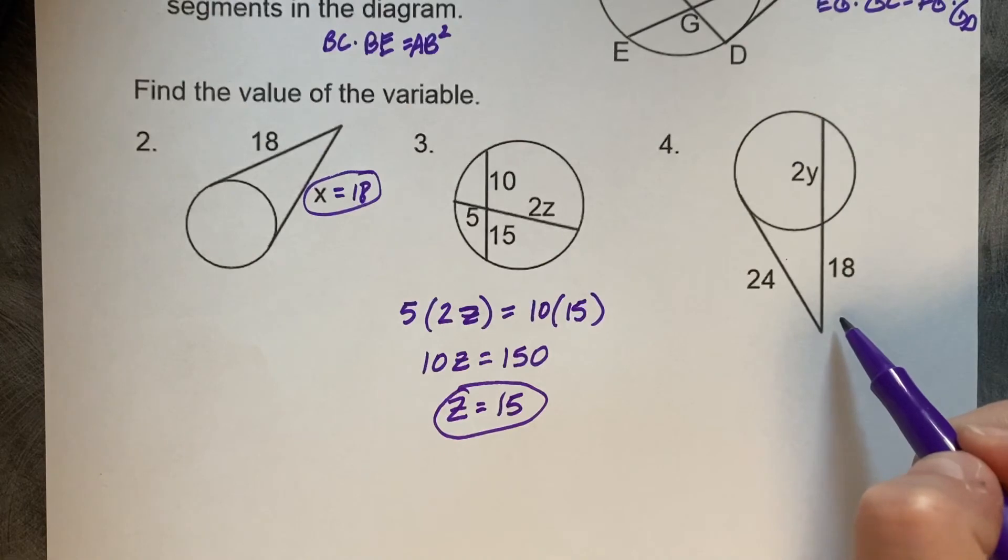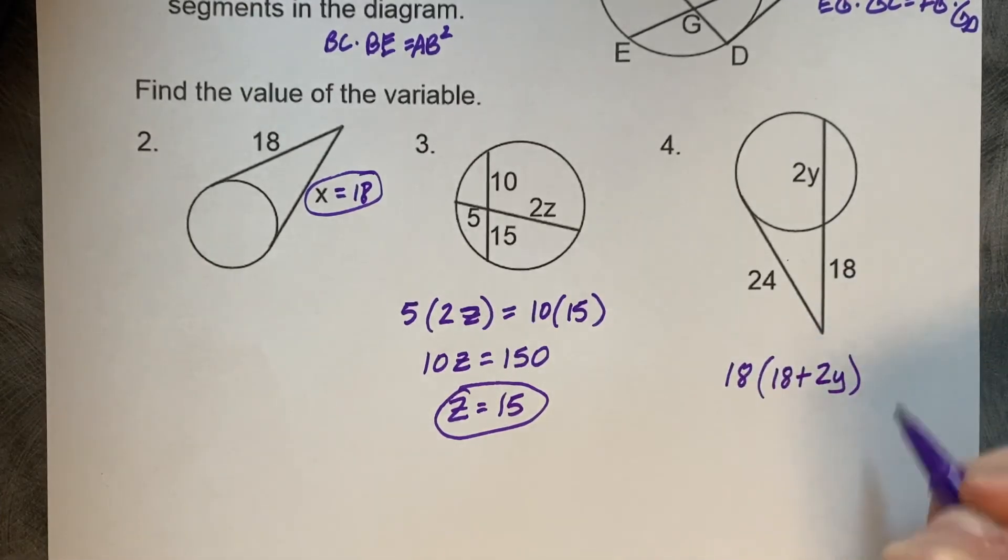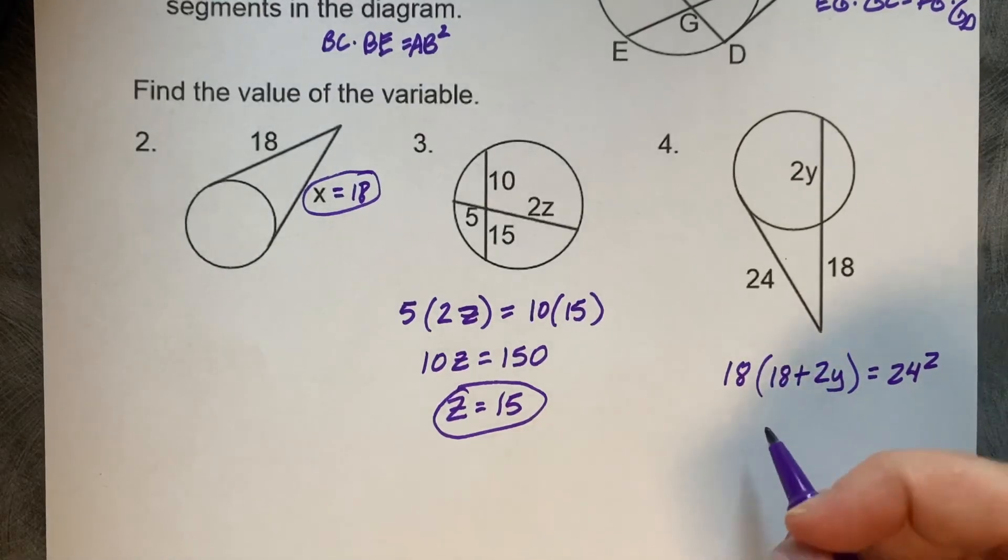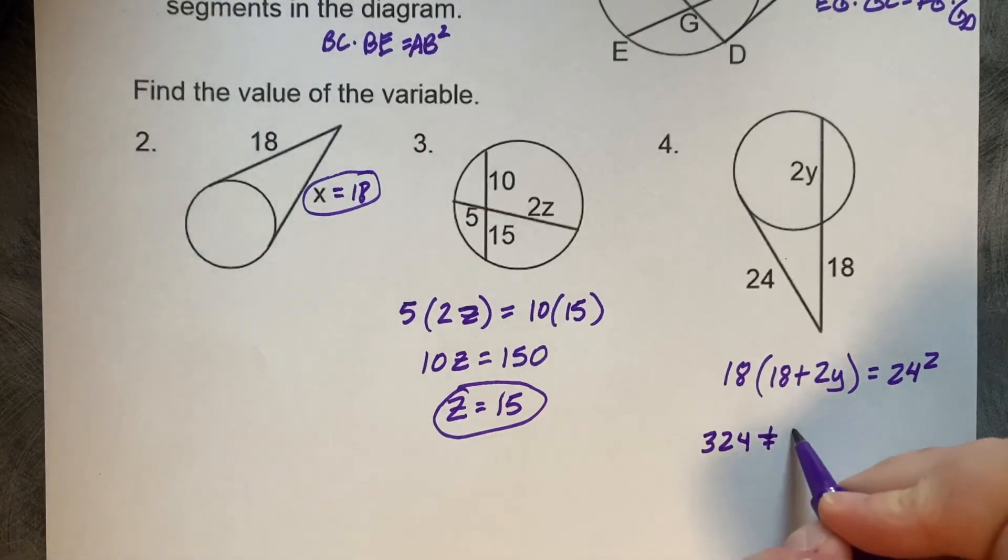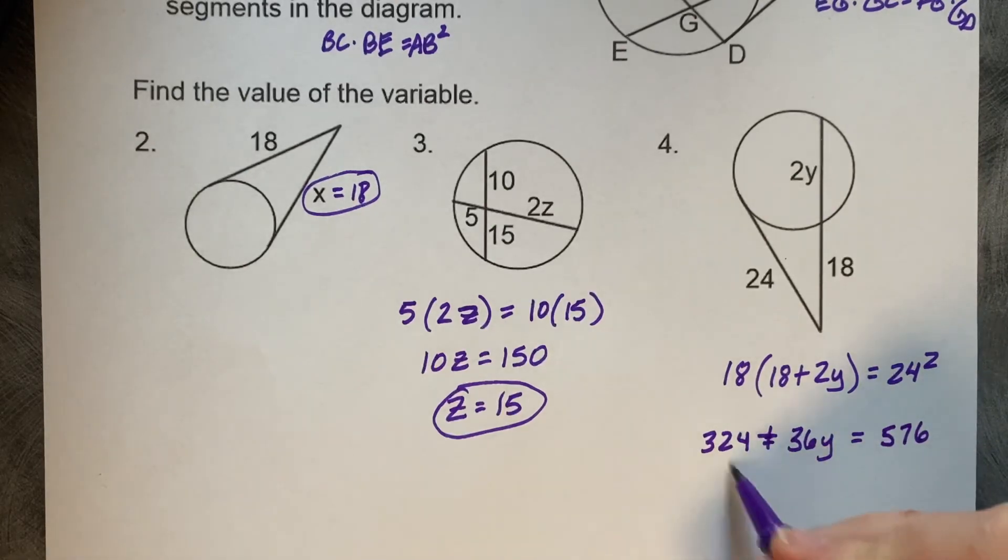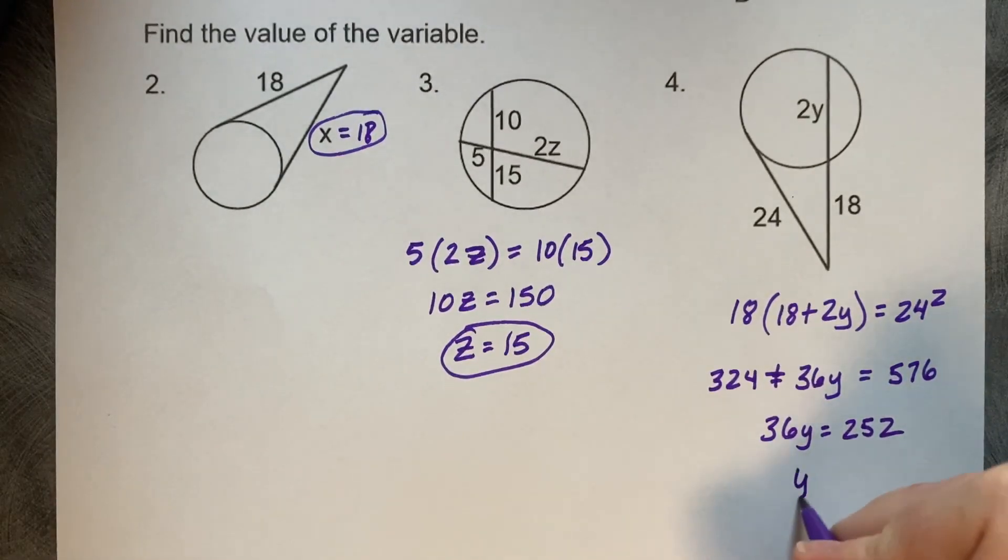Four is a secant and a tangent. So part times whole equals tangent squared. So part 18 times the whole, which is going to be 18 plus 2Y, that's the whole, equals the tangent squared or 24 squared. 18 times 18 is 324, 18 times 2 is 36Y. 24 squared is 576. Minus 324, 252, divided by 36Y equals 7.